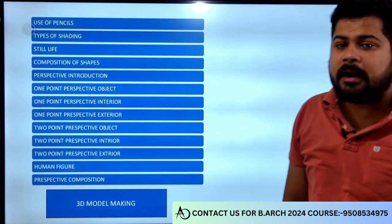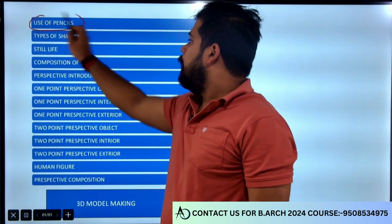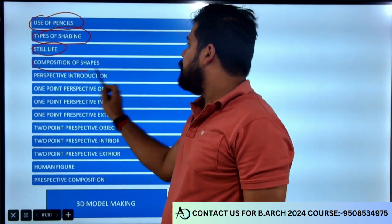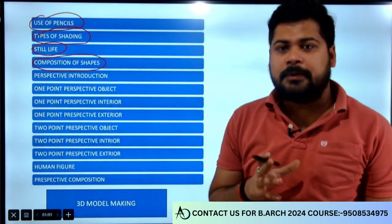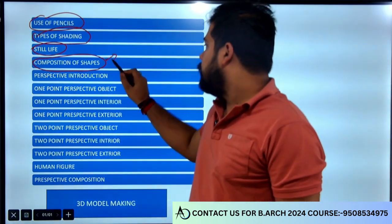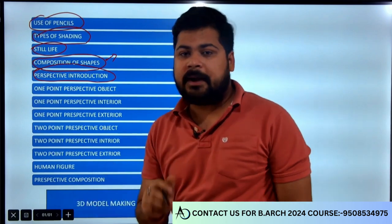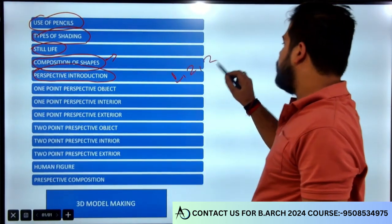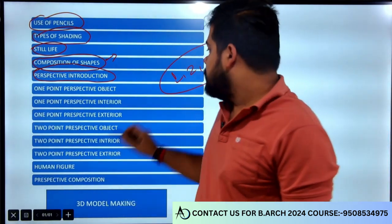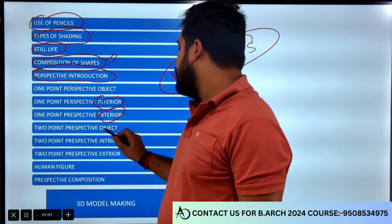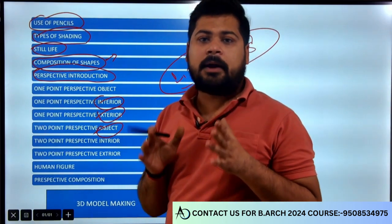Topics क्या cover करने पड़ेंगे - uses of pencil, types of shading, still life, composition of shapes। मैंने आपको कहा था कि 25 नंबर के आपके different types of compositions से shapes बनाने के लिए आ सकते हैं। Perspective का introduction भी important है - 1, 2, 3, 4, 5 point - ये पाँचों point के आपको perspective cover करने पड़ेंगे। जो कि आपका interior, exterior और object - तीनों चीजों में ये पाँचों perspective आपको cover करने हैं।